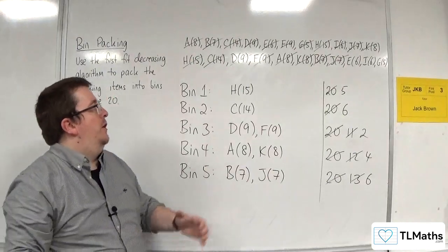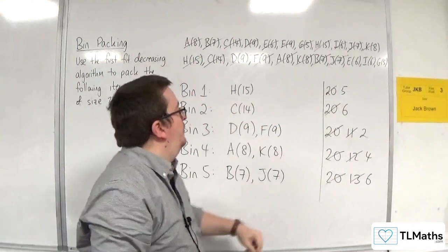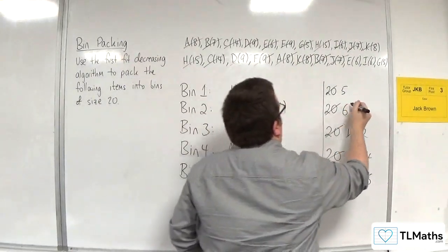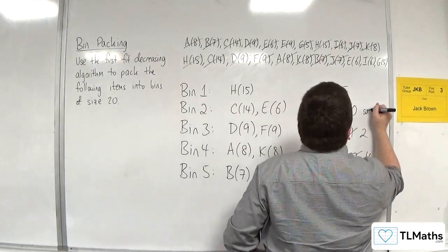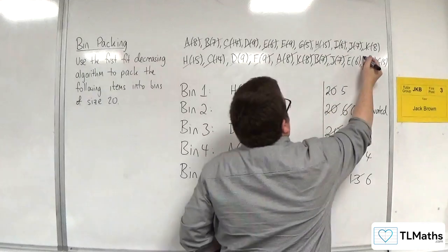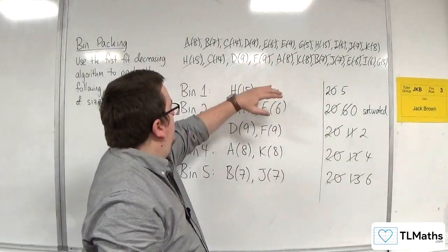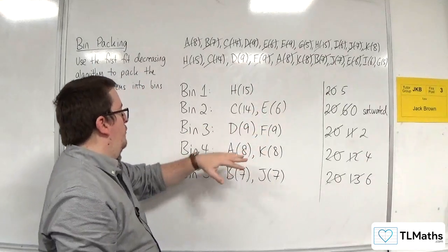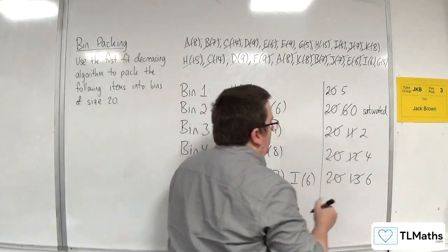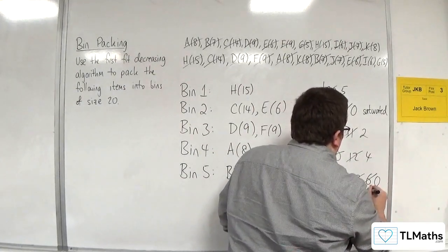Right. Now, I've got E6 comes along. It can't go into bin 1, but it can go into bin 2. So, I've got 6 available space there. So, E6 is going in here. And that means that's gone down to 0. So, that bin is saturated. Then, I've got I6. Well, I6 doesn't go into bin 1, 2, 3 or 4. But it does go into bin 5 very neatly. So, I6 is going in there. So, that's now down to 0. So, that bin is now saturated.